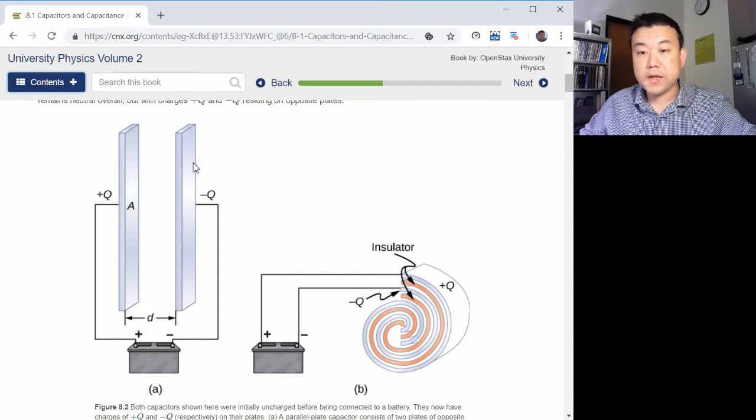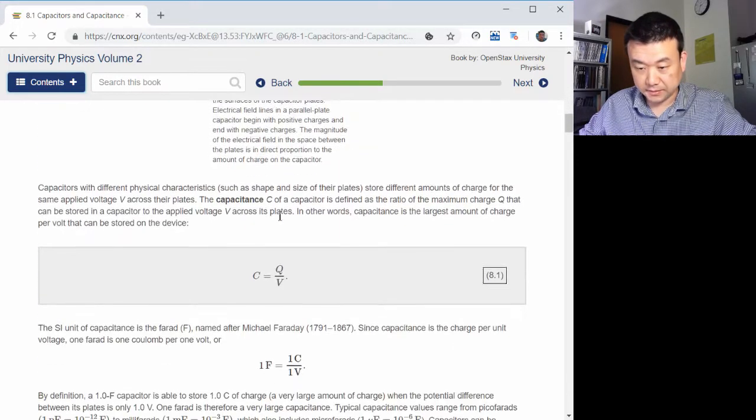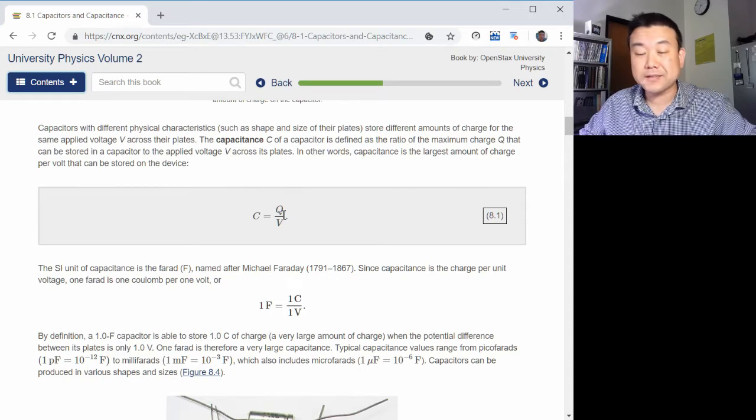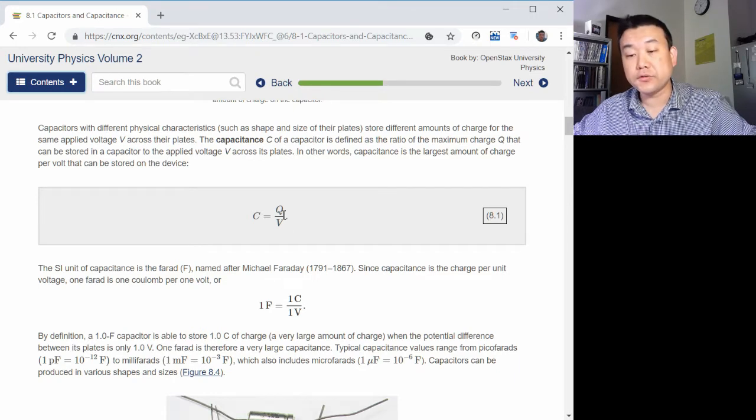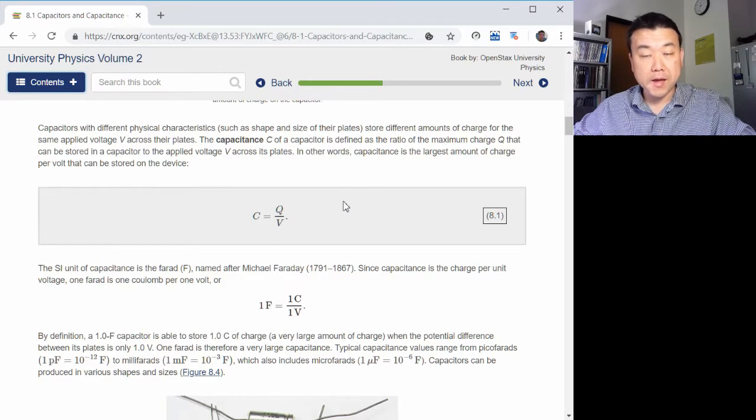So with the description of capacitors, section 8.1 defines the capacitance as charge per voltage. So capacitance really measures the capacity to store charge. And what you need to provide in order to store charge is voltage.